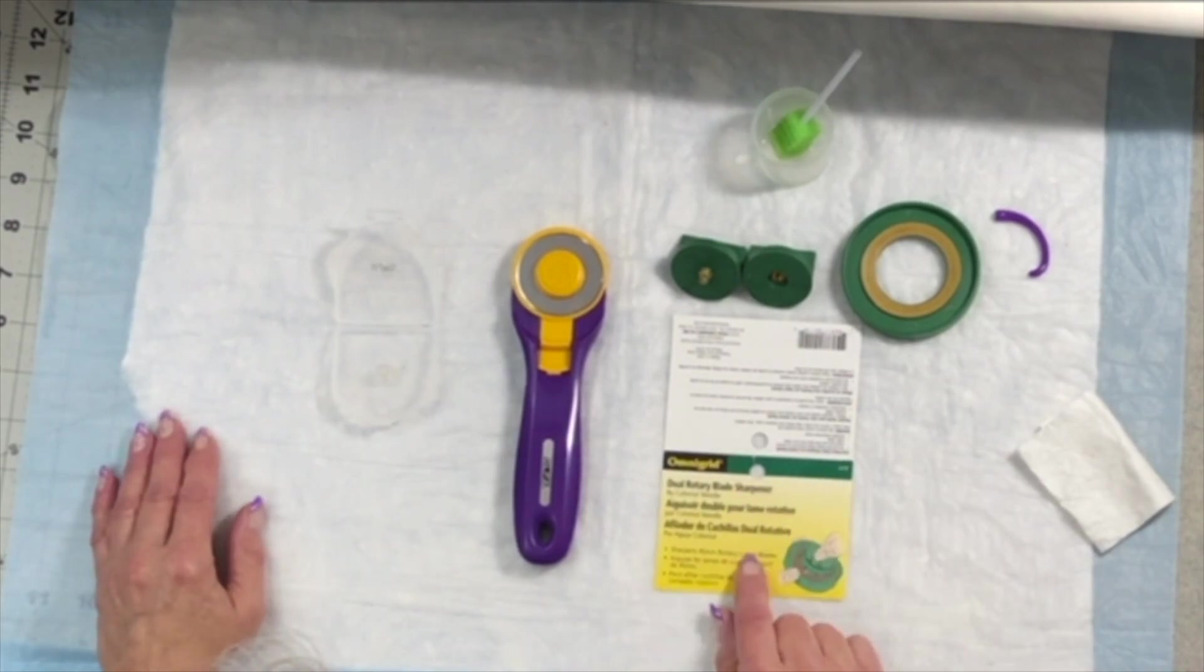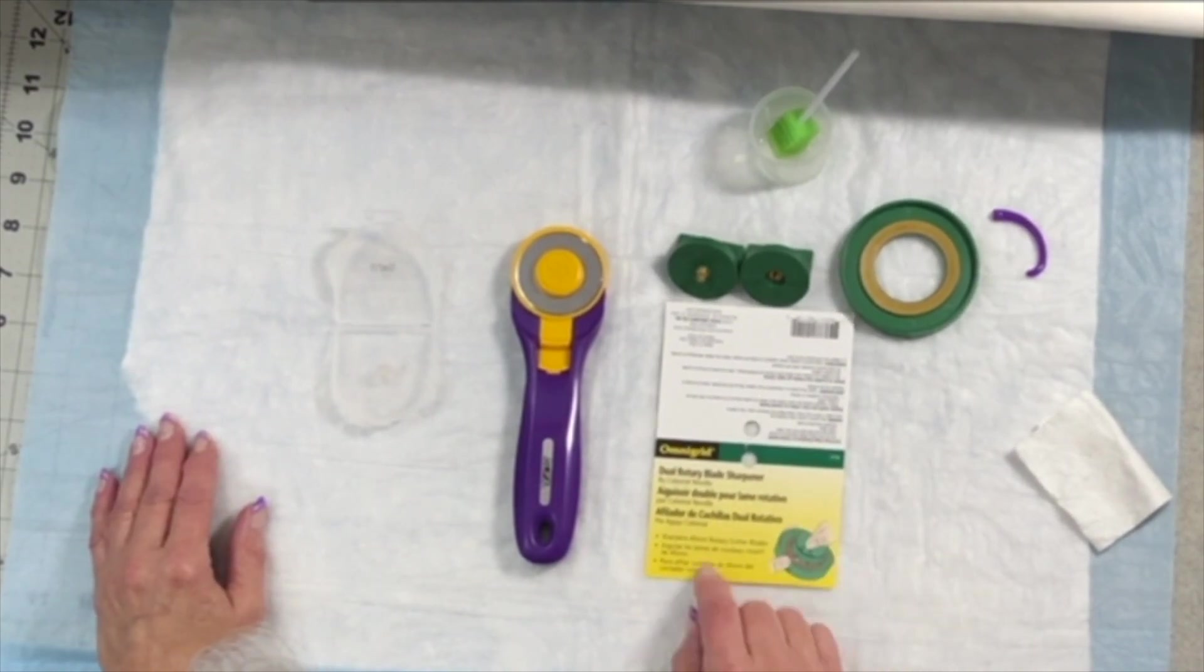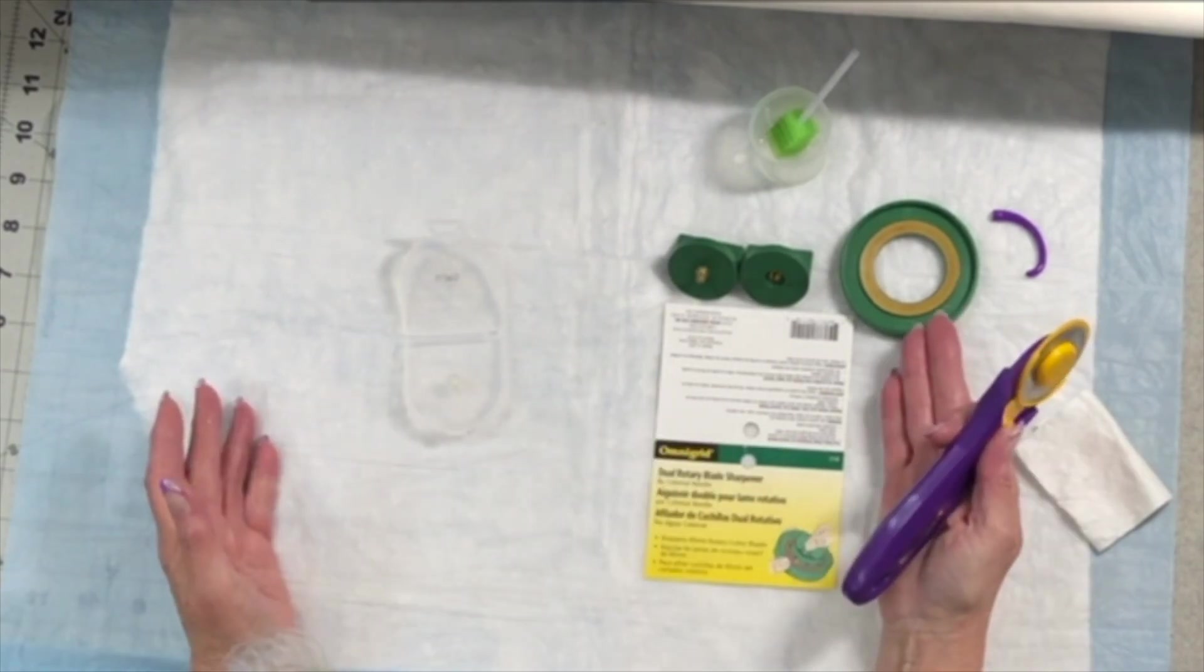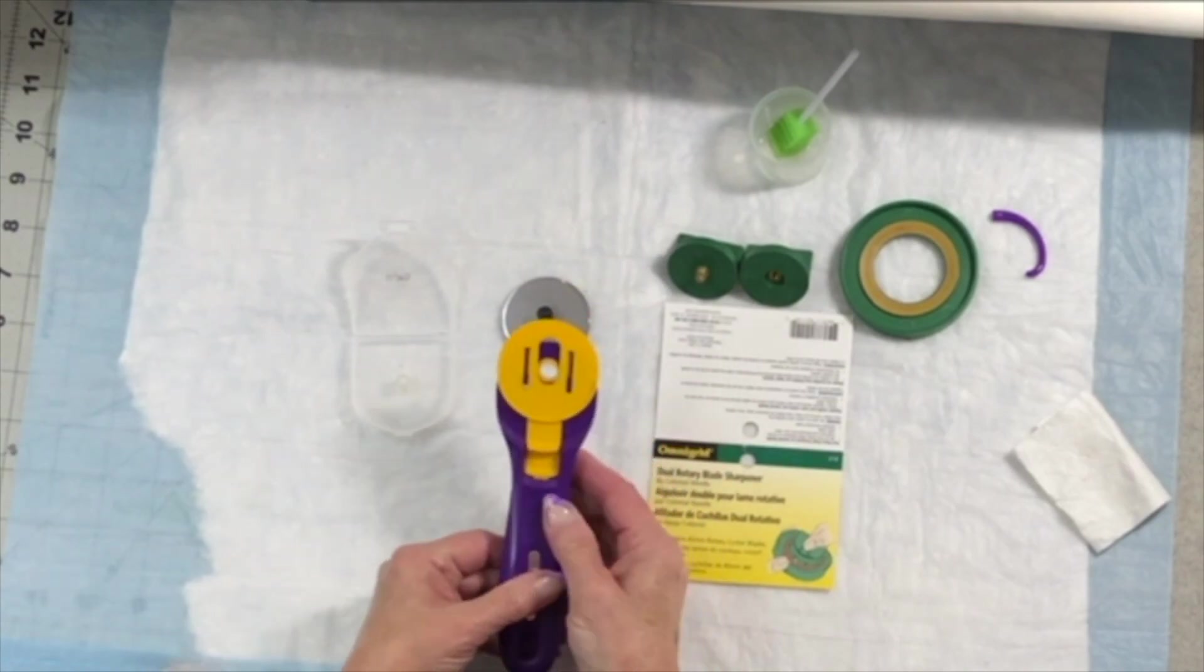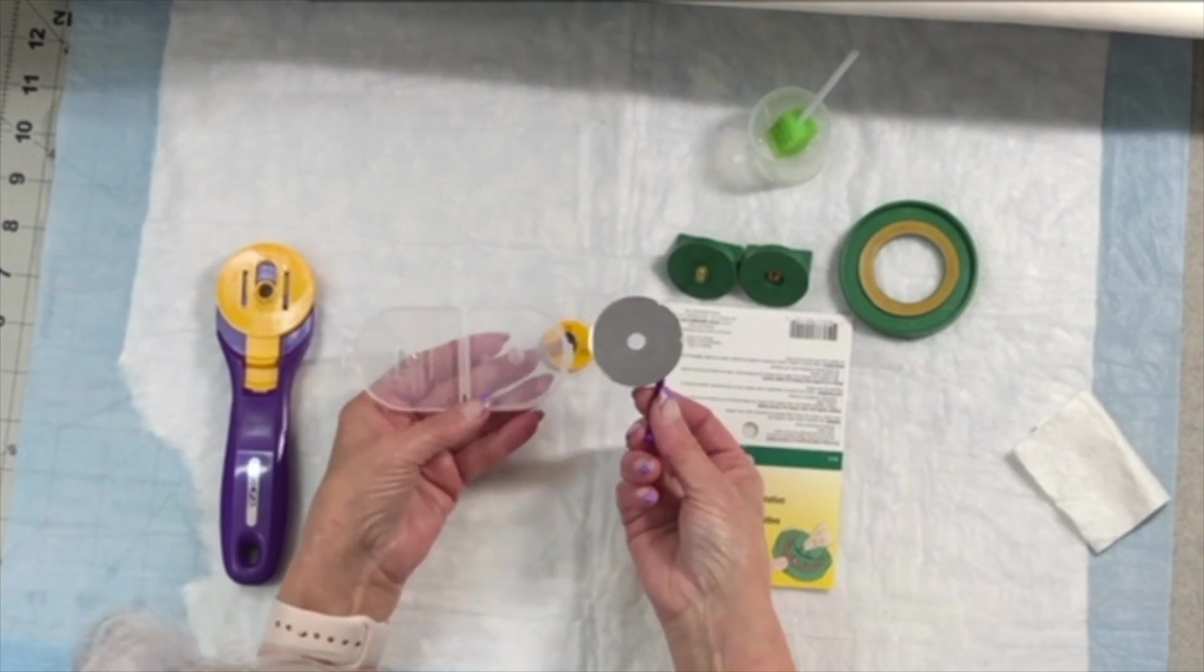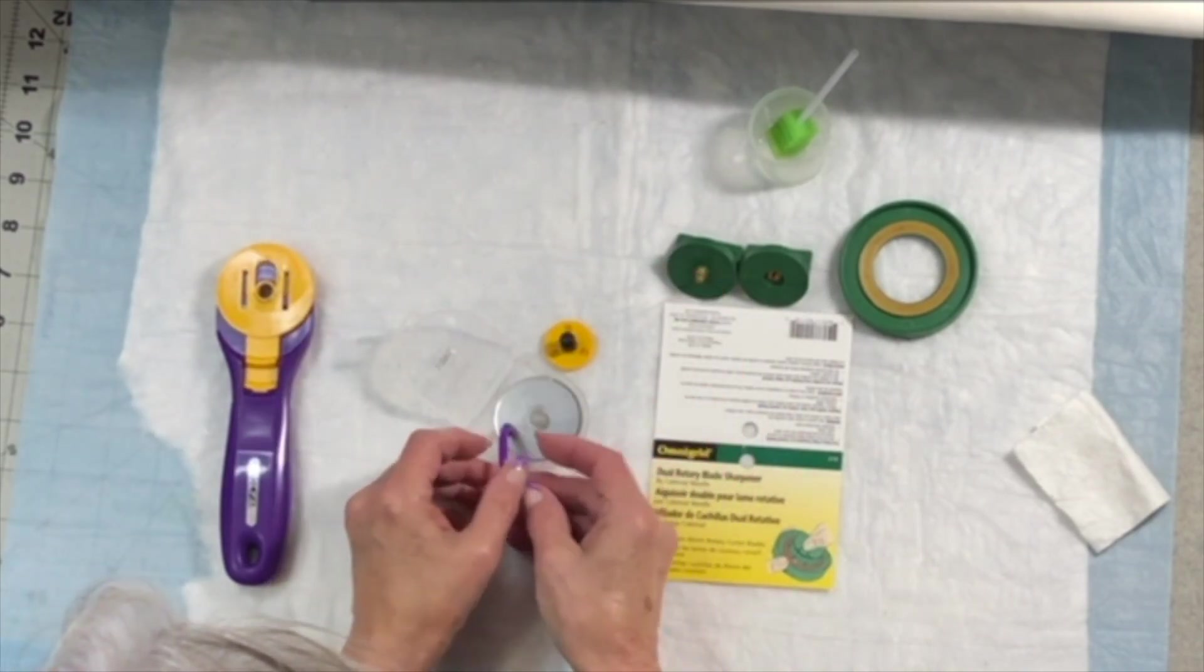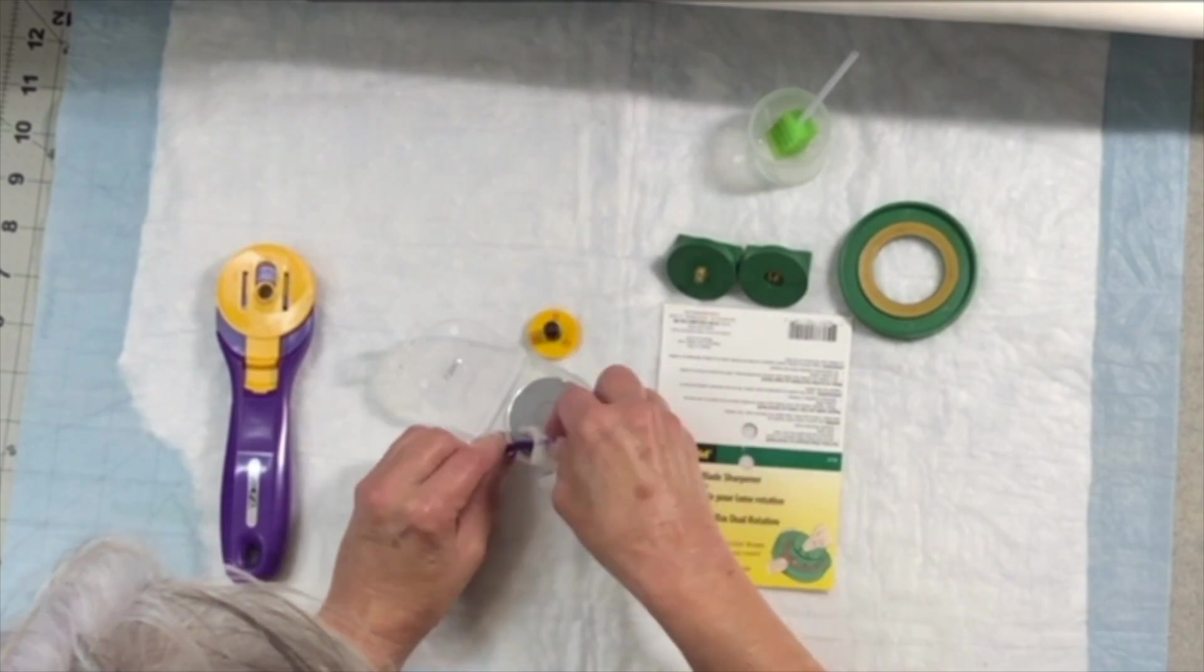The last thing I want to talk about is do rotary blade sharpeners really work. This is still in the testing stage but this Omnigrid dual rotary blade sharpener I bought at Michael's and I did get it on clearance for ten dollars. In the testing that I have been doing, I am going to show you how I am testing this out. After I've cleaned my rotary cutter, I'm going to take the blade out with my little magnet. The case that your rotary blades come in will have a little knobby thing on it so you can put that in there, hold it with the magnet and you can clean off the blade.